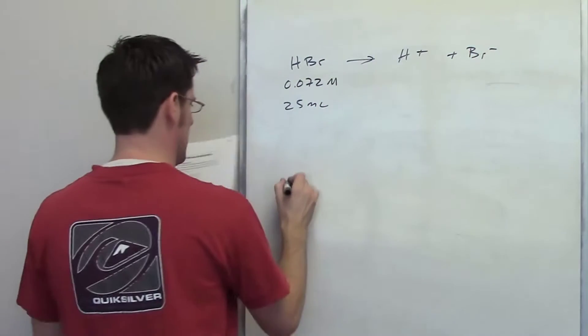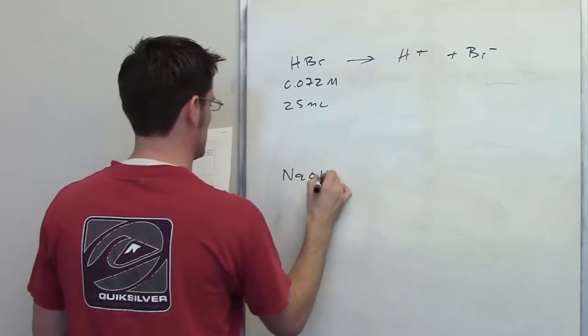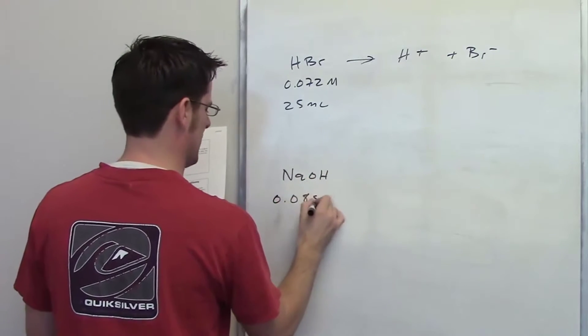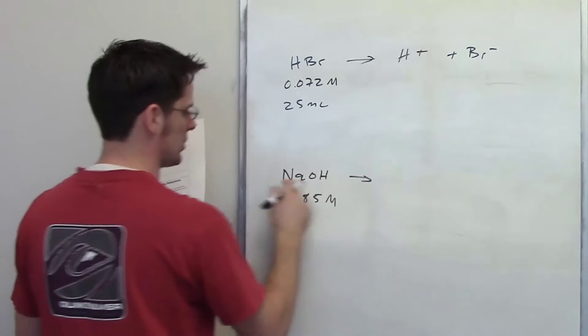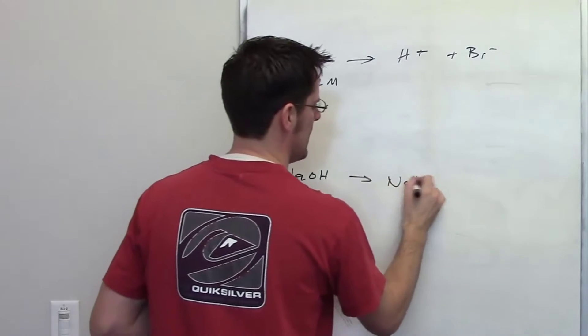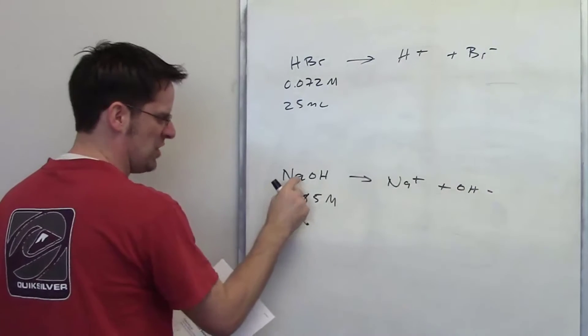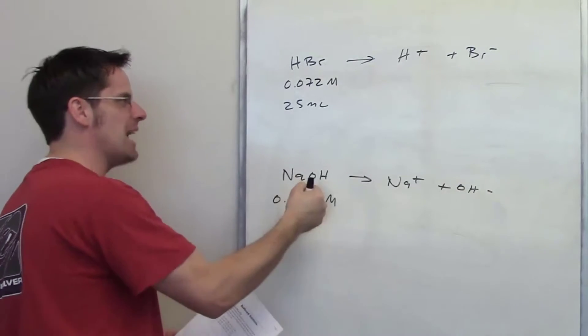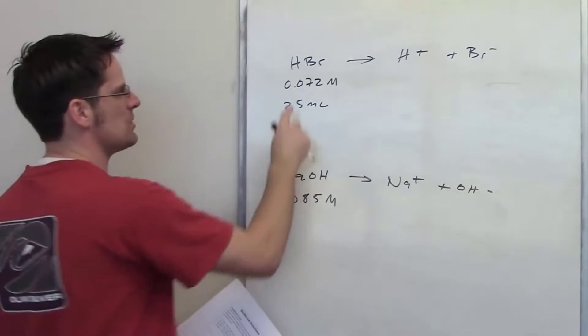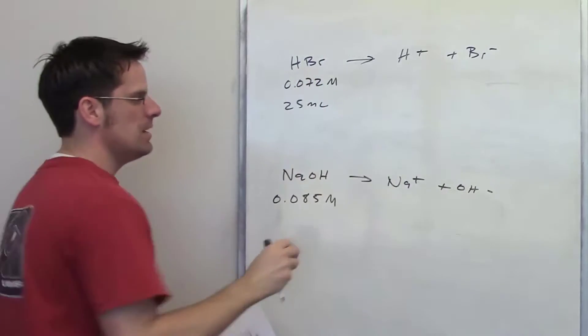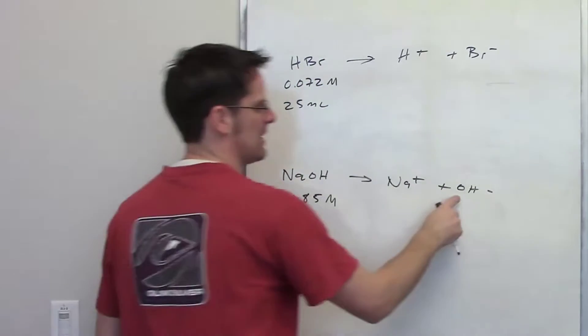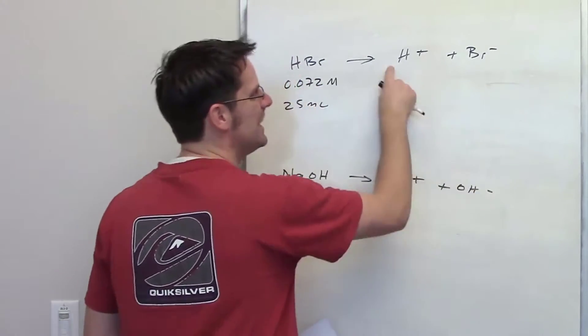It then says separately that I've got sodium hydroxide, and I've got a solution that has a concentration of 0.085 molar. It's of course going to dissociate completely to form Na+ and OH-. It asks me, how much of this sodium hydroxide do I have to add to completely neutralize this HBr? Now when we say neutralize, what we're talking about is this OH- killing the H+.